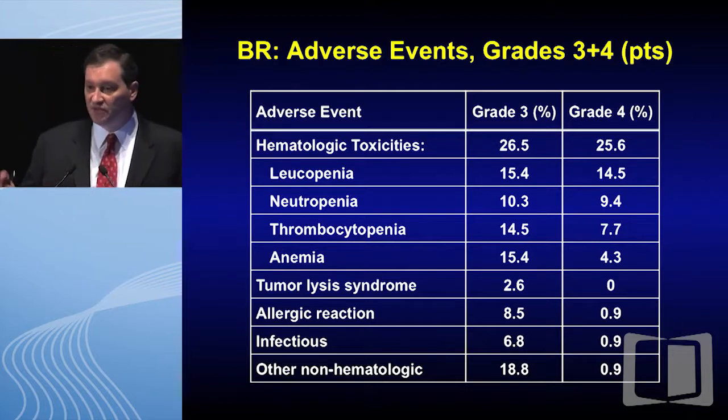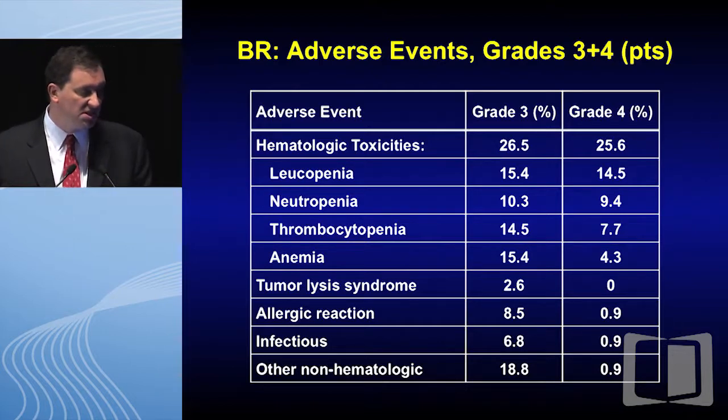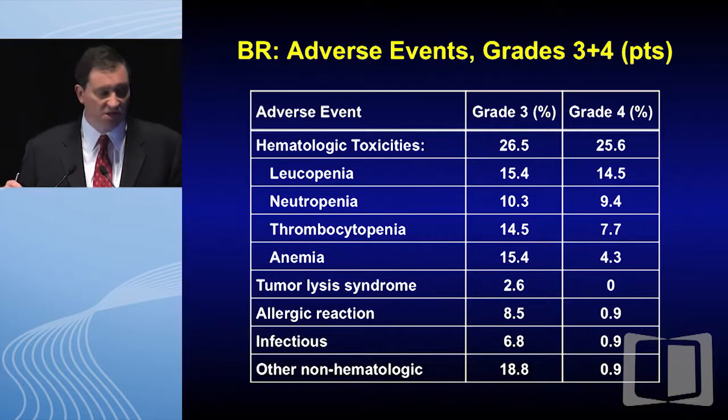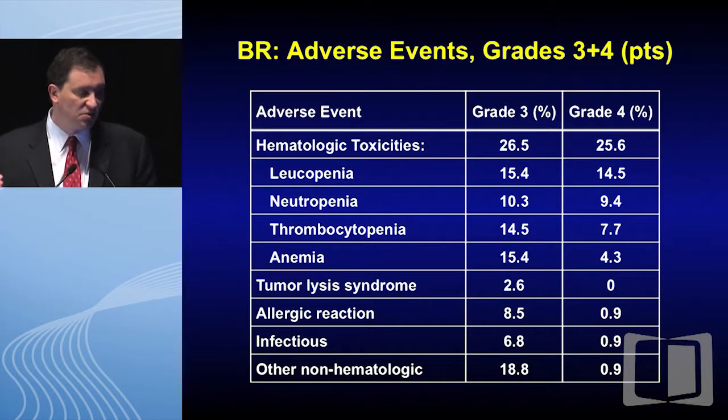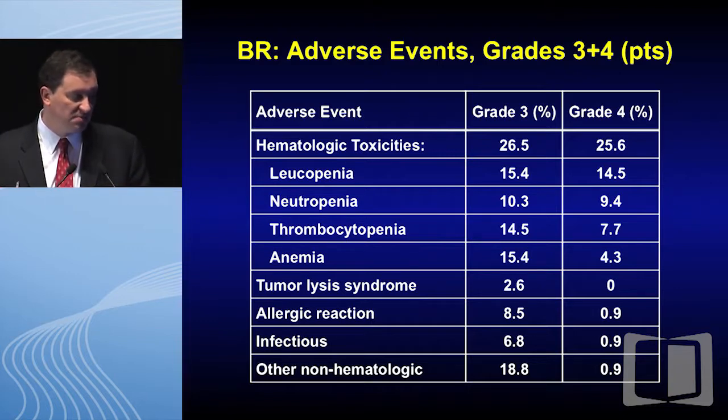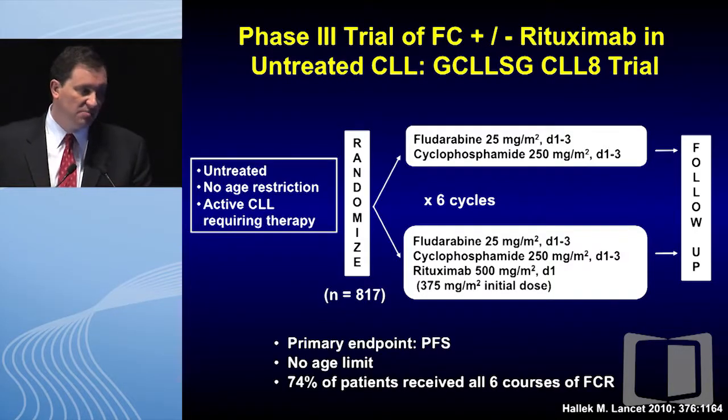Looking at adverse events from the CLL2M study, there were significant grade 3 or 4 toxicities — 26% and 25% respectively — consisting mostly of cytopenias with a few non-hematologic toxicities. The infectious rate, which is probably the most important toxicity given its role in morbidity and mortality, was 6.8%. I do yield to Dr. Smith that this is a very low number compared to what we will see with FCR.